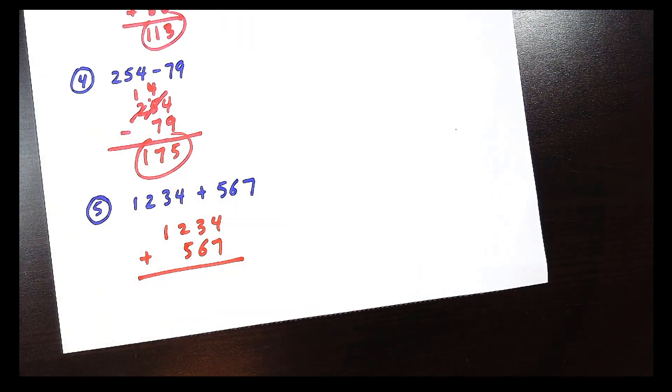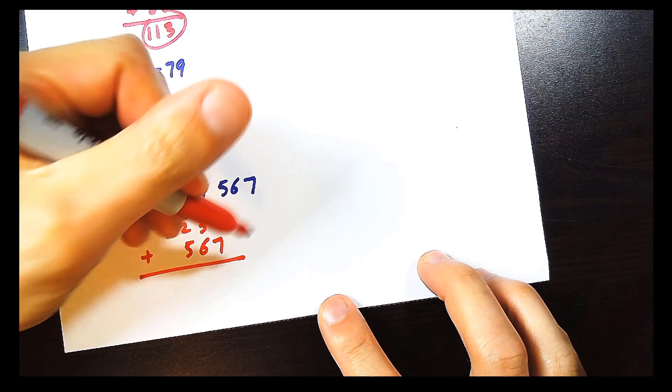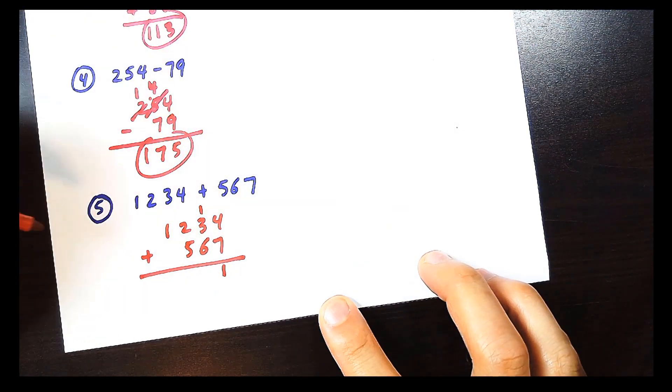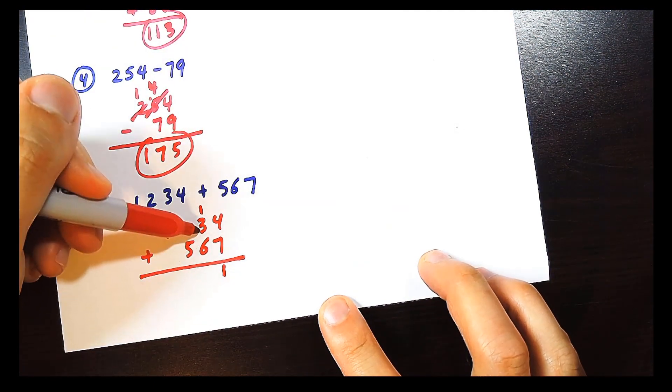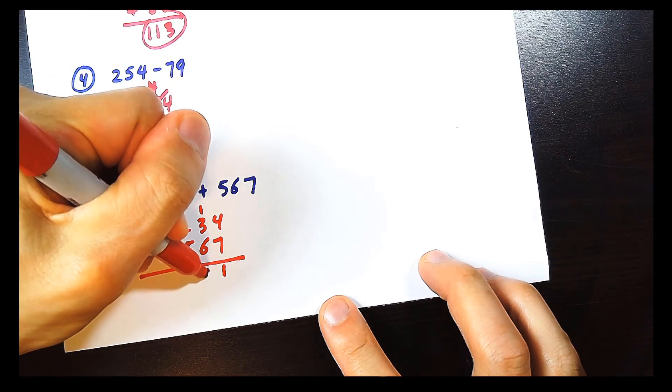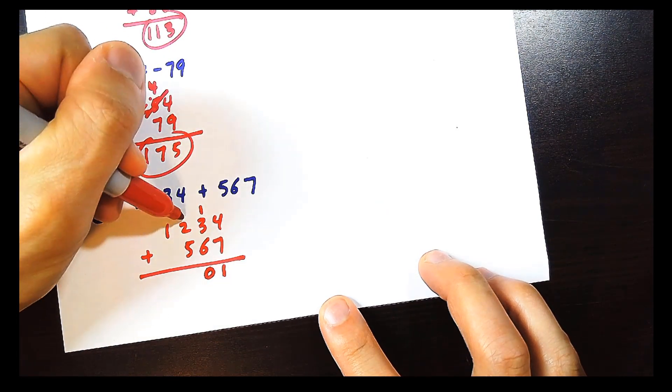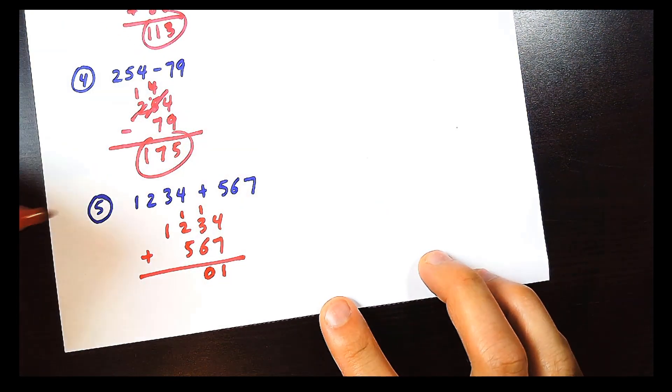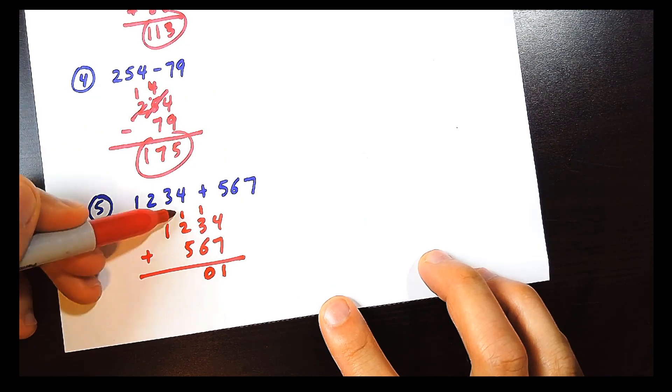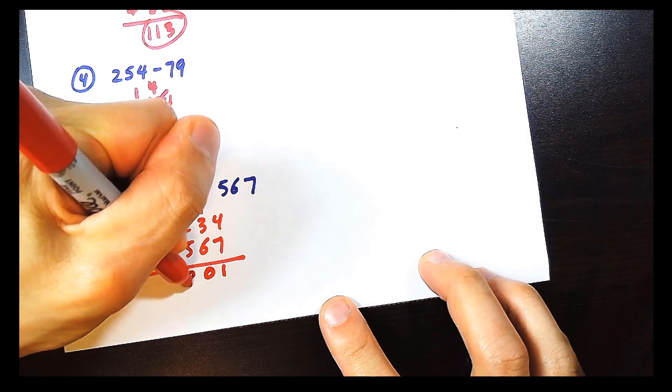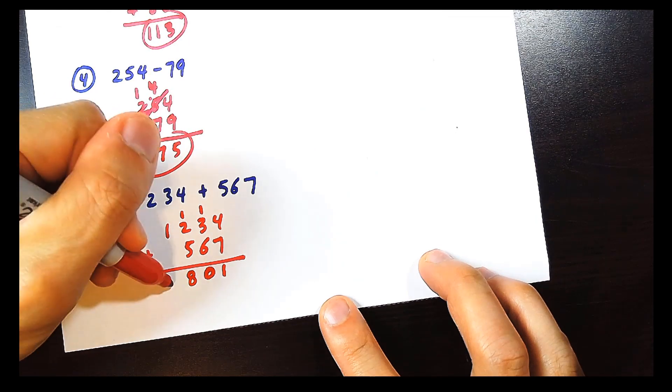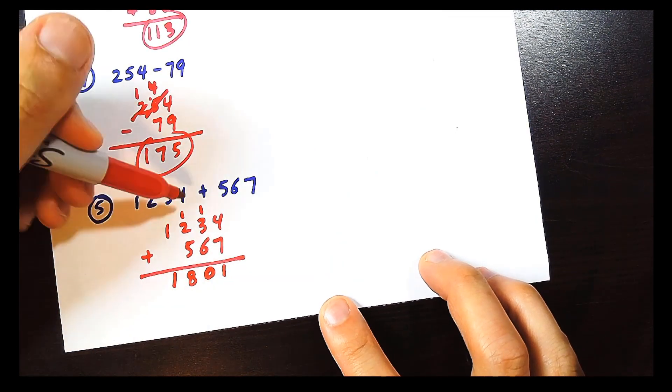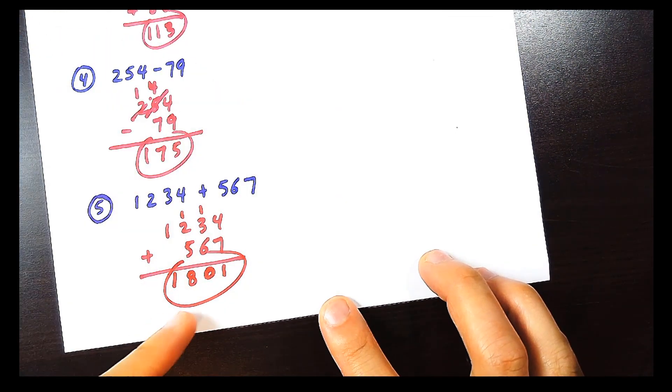So let's go right to left. 7 plus 4 is 11. 6 plus 3 is 9, plus 1 more is 10. So you put the second digit here and you carry the 1 over there. 5 plus 2 is 7, plus 1 more is 8. And then 1 plus nothing is 1. So this question here adds to be 1,801.